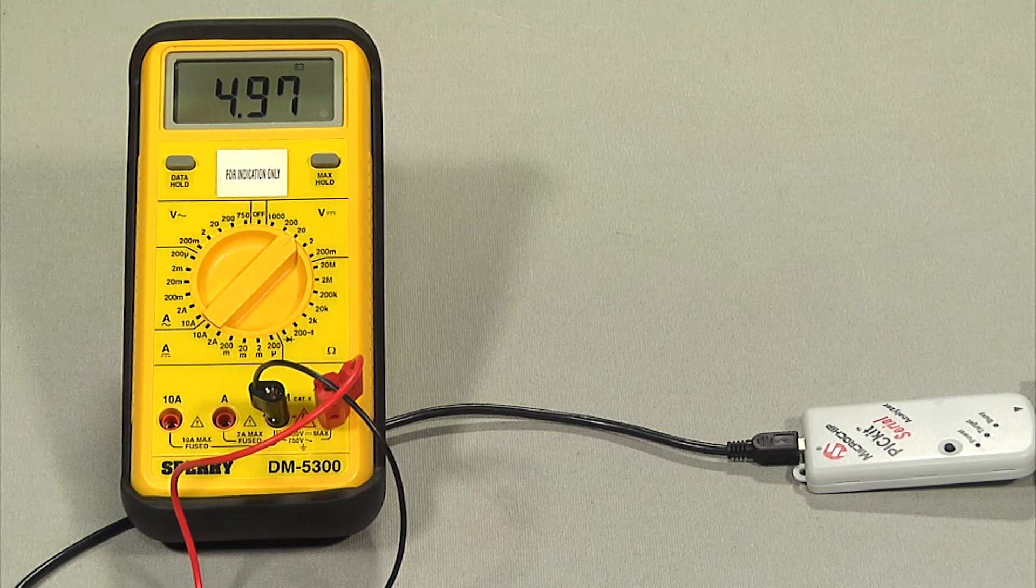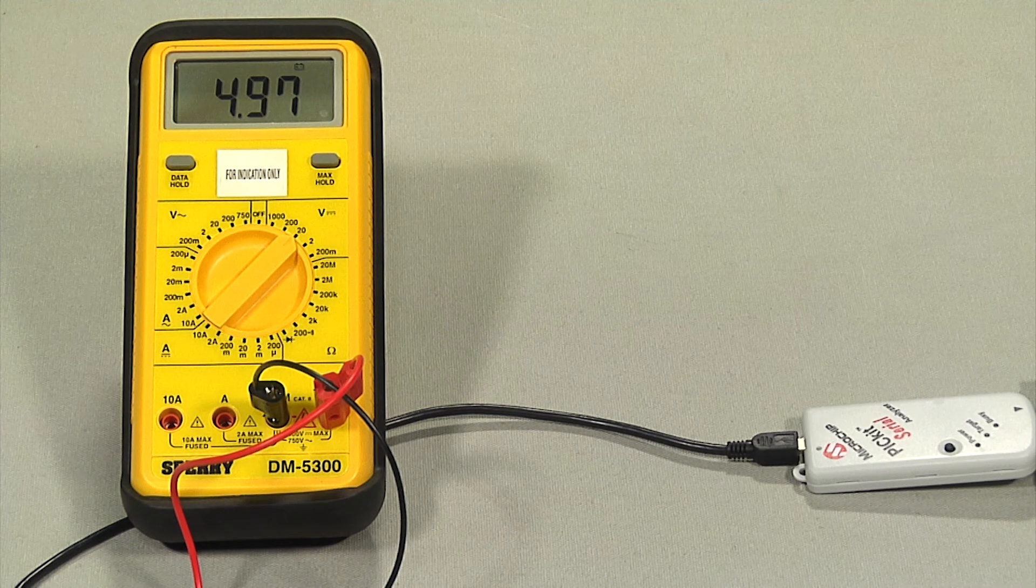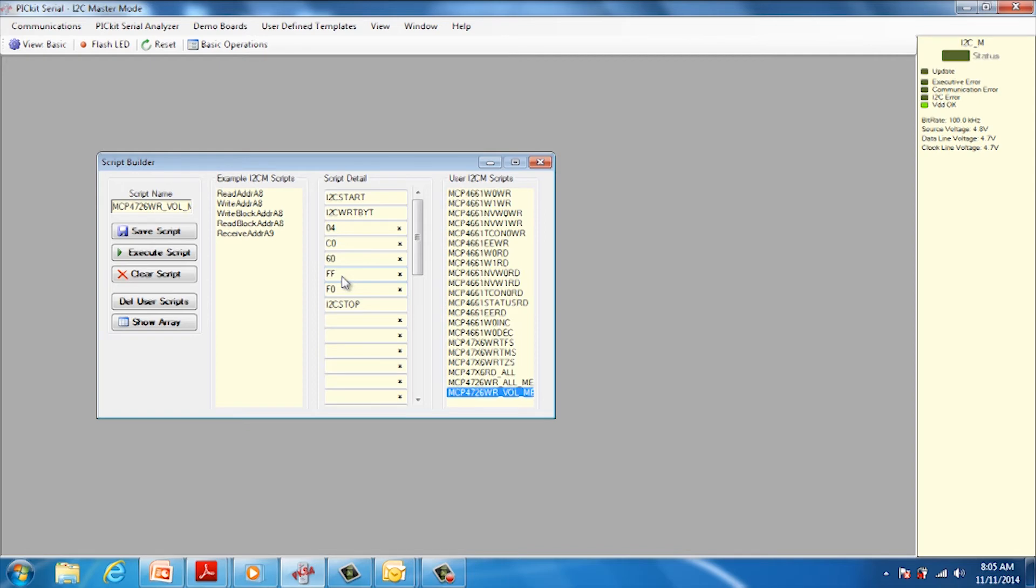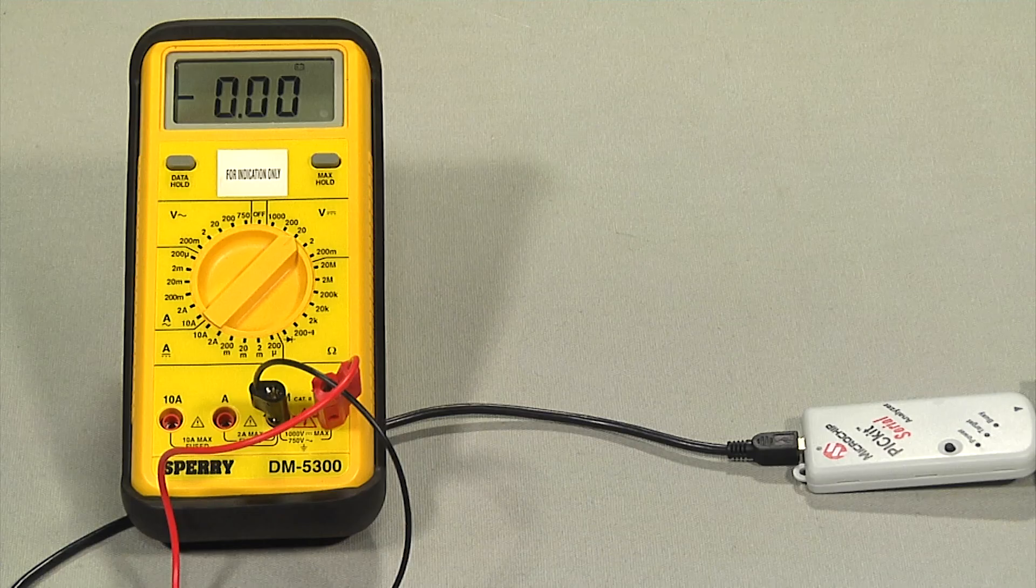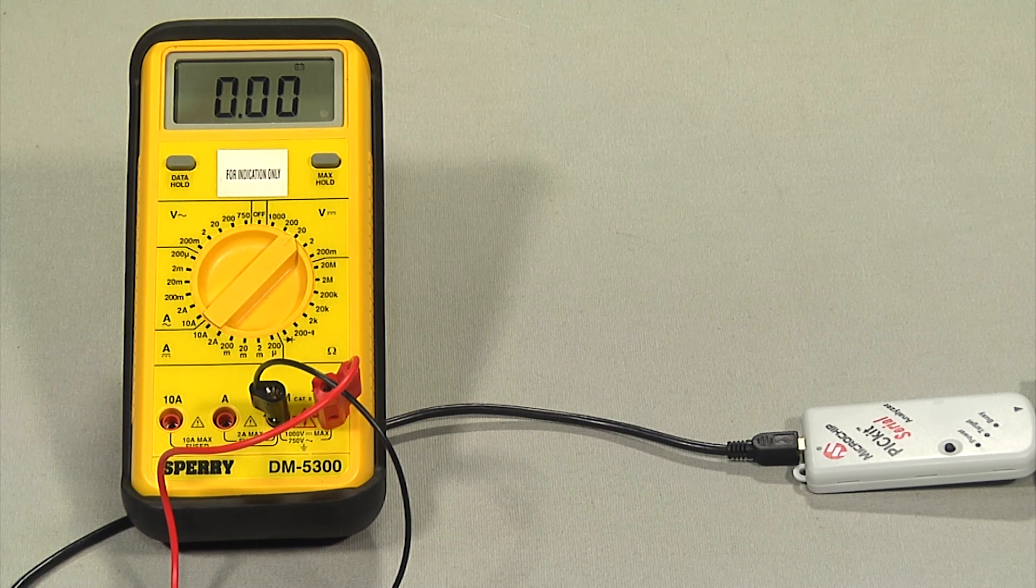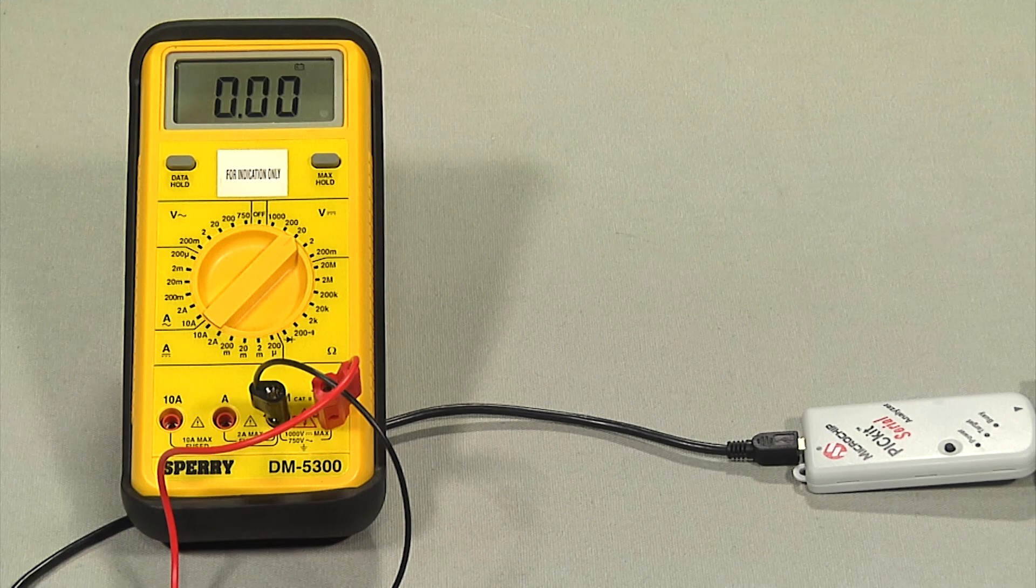The voltage reading on the DVM should be near 5 volts. The 4 bytes preceding the I2C stop command can be modified to change the DAC register setting. Modify the final 4 bytes to read 0x00. Now the voltage reading on the DVM should be near 0 volts or 0 scale.